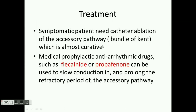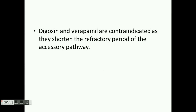Treatment. Symptomatic patients need catheter ablation of the accessory pathway — that is, the bundle of Kent — which is almost curative. Medical prophylactic antiarrhythmic drugs such as flecainide or propafenone can be used to slow conduction and prolong the refractory period of the accessory pathway. Digoxin and verapamil are contraindicated as they shorten the refractory period of the accessory pathway.